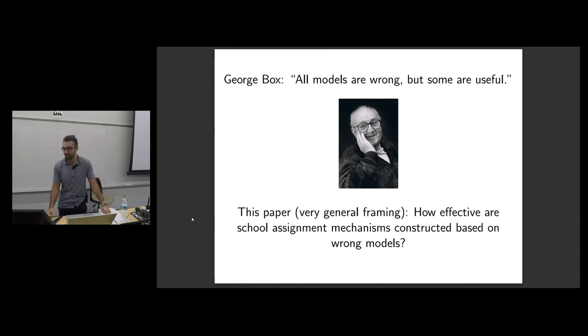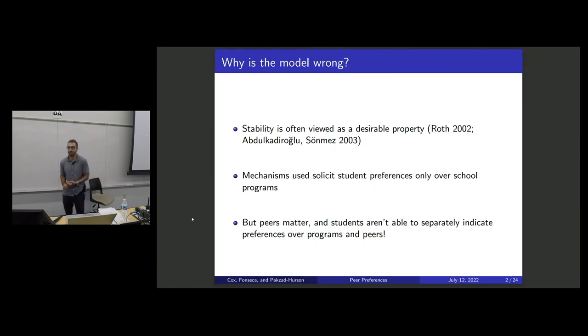So this paper, again very generally, is about how effective school choice assignment mechanisms are when they're constructed based on incorrect models. And what do I mean by incorrect model? Why is that interesting?